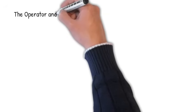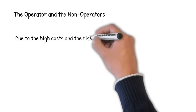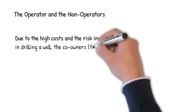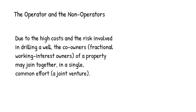Before we get into the production side of the E&P project, I want to discuss the difference between the operator and the non-operators. Due to the high costs and the risk involved in drilling a well, the co-owners, also known as fractional working interest owners of a property, may join together in a single common effort, also known as a joint venture.